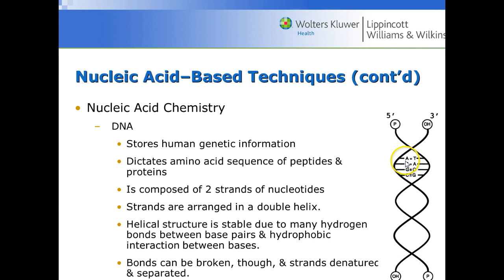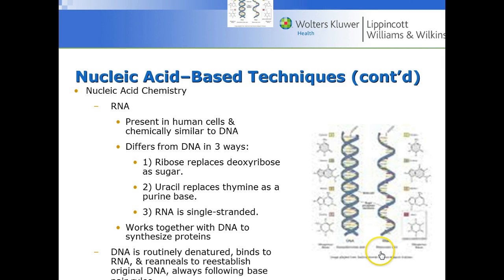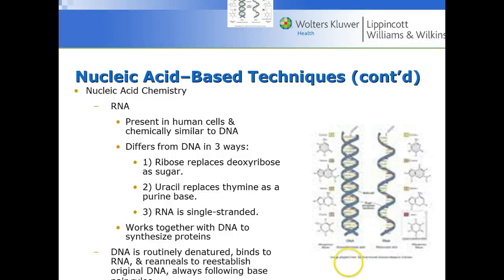Base pairs refer to adenosine, thymine, guanine, and cytosine — these are all matching pairs. We also have hydrophobic bonds between bases. Bonds can be broken and strands denatured and separated, which is part of the testing. RNA is different from DNA in three ways: ribose replaces deoxyribose as the sugar, uracil replaces thymine, and RNA is single-stranded. RNA works together with DNA to synthesize proteins. DNA is routinely denatured, binds to RNA, and re-anneals to establish new DNA.